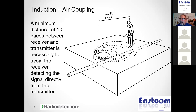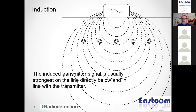Even when you're far enough away to avoid air coupling, the air-coupled signal can still affect your depth readings. When inducing, depth readings are thrown off — even 40 or 50 feet away can be too close for dependable depth readings. Another issue: if you have multiple utilities within that 6-to-10-foot induction zone, the signal is strongest at the center of the antenna, but if surrounding utilities are better conductors, they may carry the signal better than the utility directly underneath — such as a cast iron pipe with cable TV and telephone lines nearby.